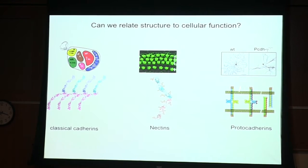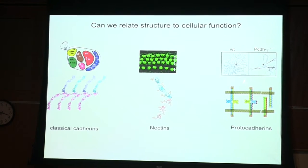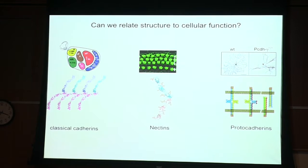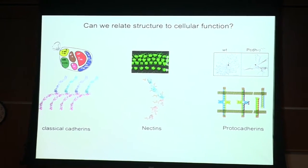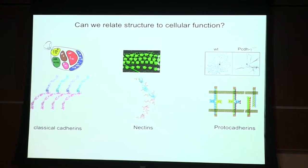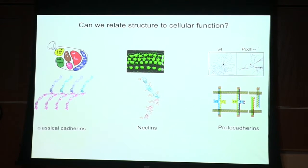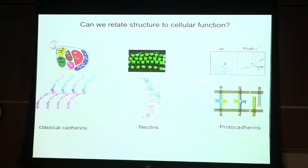The second half of my talk will be devoted to some very new work involving how protein-protein interactions play a role in a specific problem in the wiring of the nervous system — in particular, how neurons know when to form synapses and when to avoid each other. All of this will be based on common families of proteins.